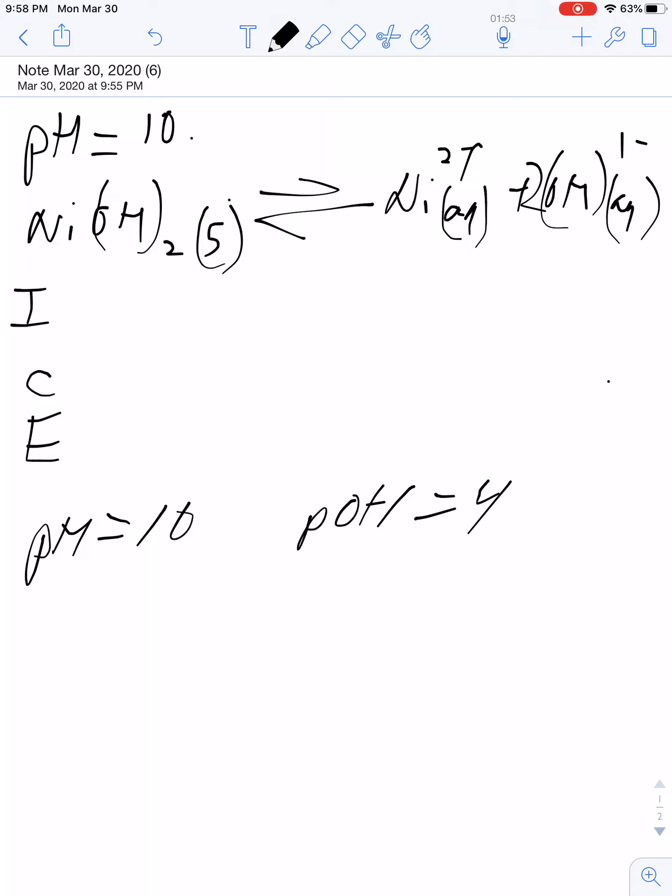So that means my equilibrium concentration of hydroxide is going to be 1 times 10 to the negative 4th molar. Now I know this.